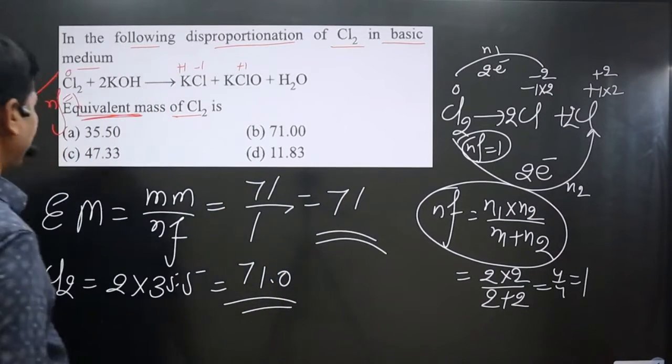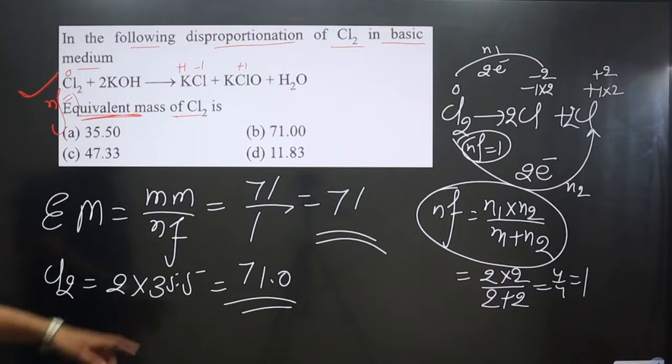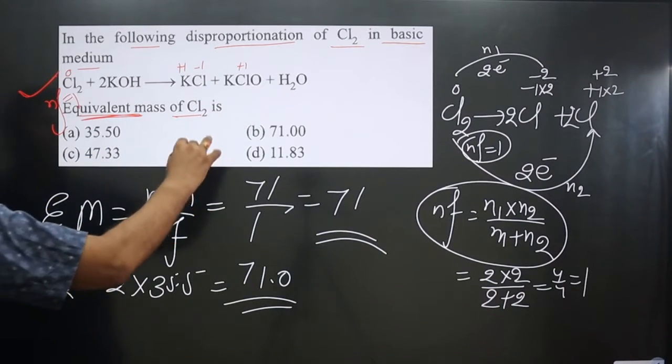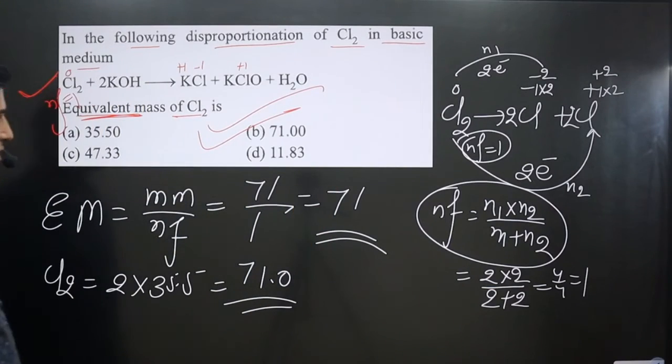So we got equivalent mass for the chlorine gas is 71. You can see we have option B is correct. Very interesting question.